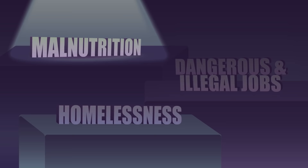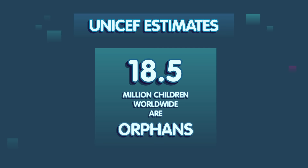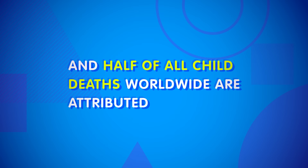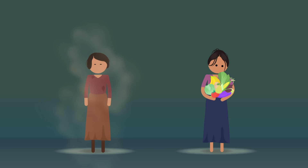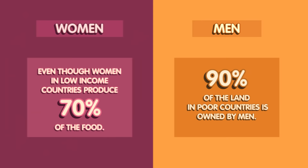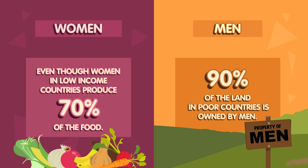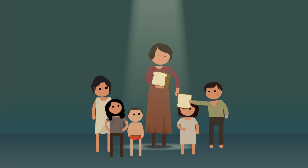Let's go to the Thought Bubble to talk about two groups that are particularly vulnerable in low-income countries — children and women. The results of child poverty range from malnutrition to homelessness to children working in dangerous and illegal jobs. UNICEF estimates there are 18.5 million orphaned children worldwide, and an estimated 150 million are engaged in child labor. Child malnutrition is worst in South Asia and Africa, where one-third of children are affected, and half of all child deaths are attributed to hunger. Women also make up a disproportionate number of the globally poor — 70% of those at or below absolute poverty levels are women. Some of this results from women being kept from working due to religious or cultural beliefs, and many women who do work don't get to control their labor's fruits. Even though women in low-income countries produce 70% of the food, men own the land — 90% of land in poor countries is owned by men. The poverty of children and women are connected, specifically by reproductive healthcare: poor access contributes to higher birth rates, and less money plus more mouths to feed equals more child poverty.